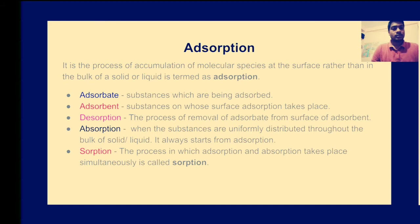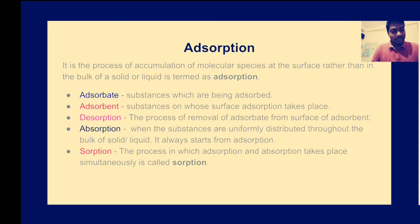Adsorption is the process of accumulation of molecular species at the surface rather than in the bulk of a solid or liquid. For example, if you have an unused table kept for a long time, you will find dust particles over it — this is a good example of adsorption. Another example is silica gel or alumina gel adsorbing moisture from the environment.